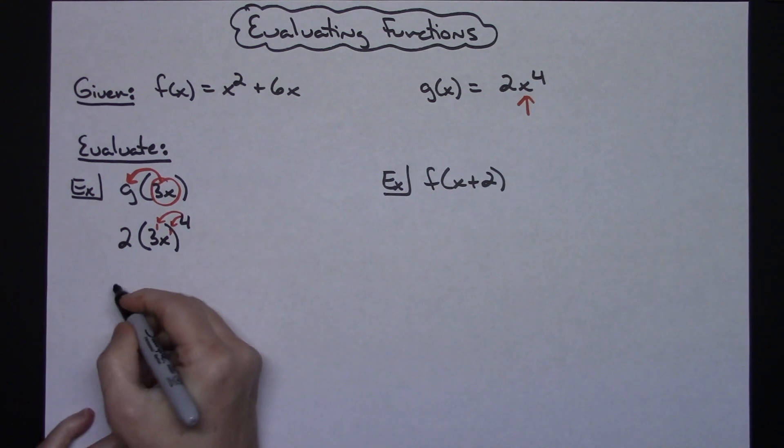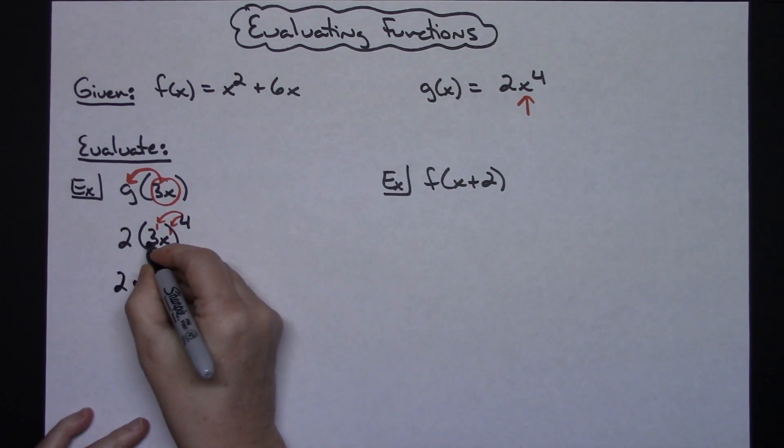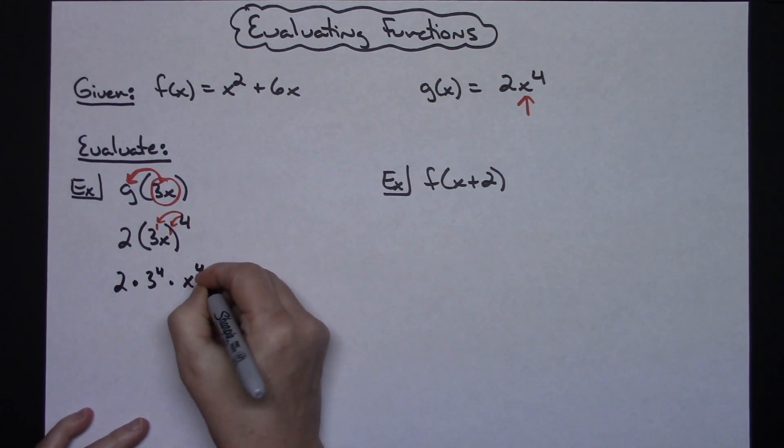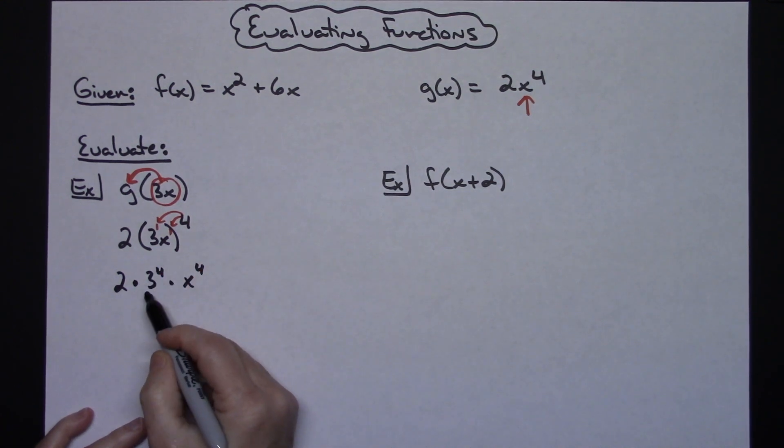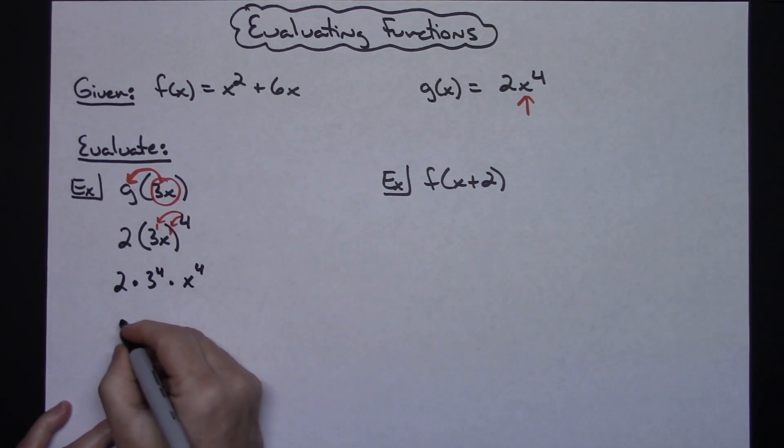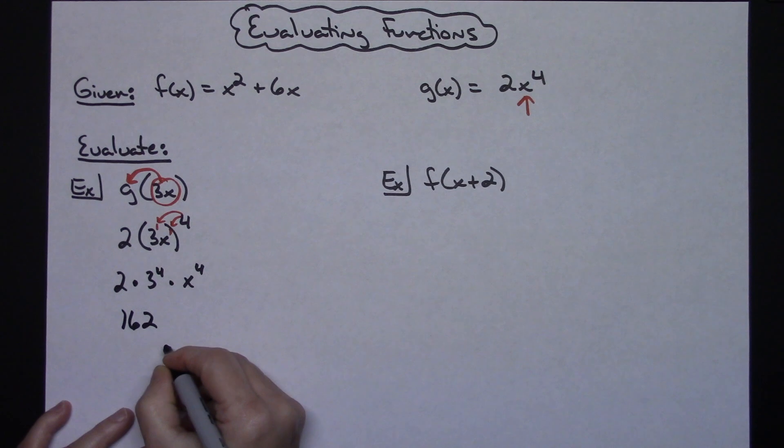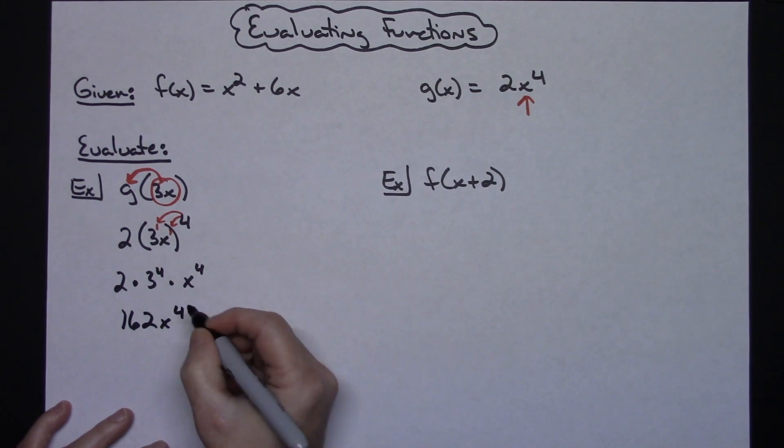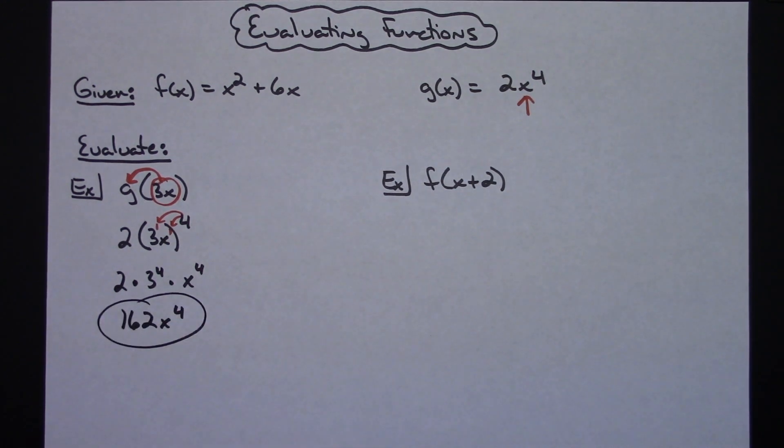Power raised to a power means I'm going to multiply those exponents. So the 2 will be out in front, I'll have 3 to the fourth power and x to the fourth power. 3 to the fourth power times 2 gives us 162x to the fourth. A pretty straightforward example there.